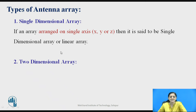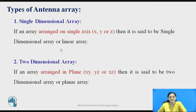This is a single dimensional array because the array elements are arranged on either the x, y, or z axis. But if you take the combination of two axes, a two dimensional array can be formed. If an array is arranged in a plane — either x-y plane, y-z plane, or x-z plane — then it is said to be a two dimensional array, also known as a planar array.